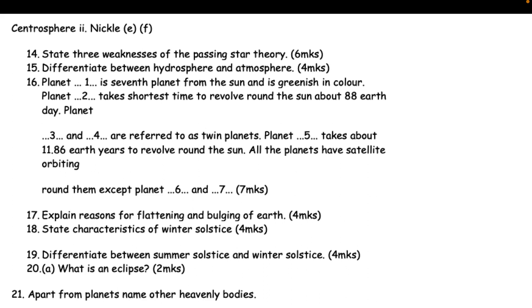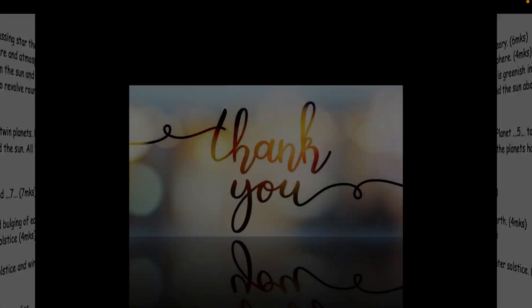17. Explain reasons for flattening and bulging of Earth (4mks). 18. State characteristics of winter solstice (4mks). 19. Differentiate between summer solstice and winter solstice (4mks). 20. (a) What is an eclipse? (2mks). 21. Apart from planets, name other heavenly bodies.